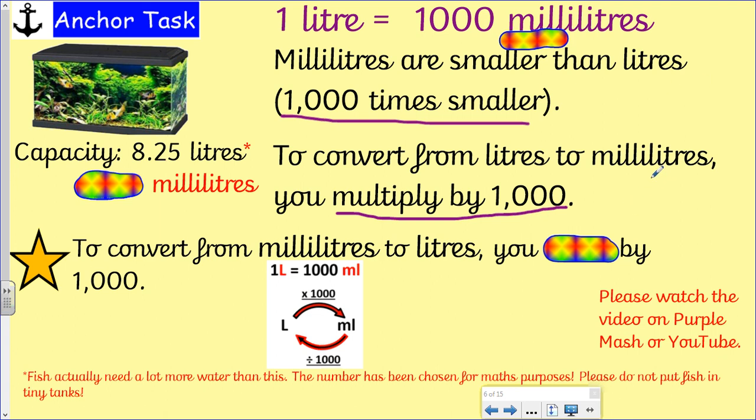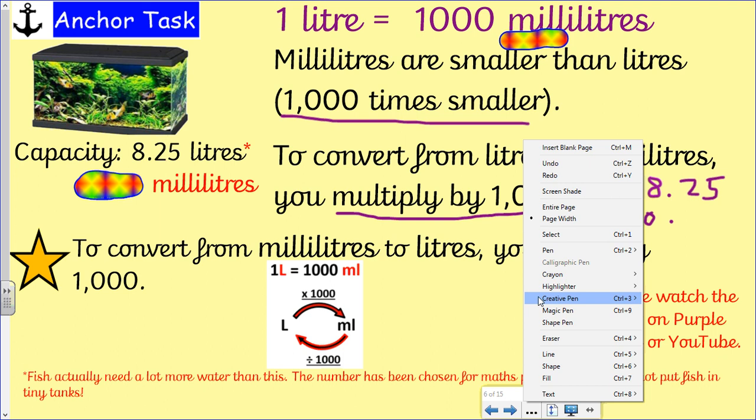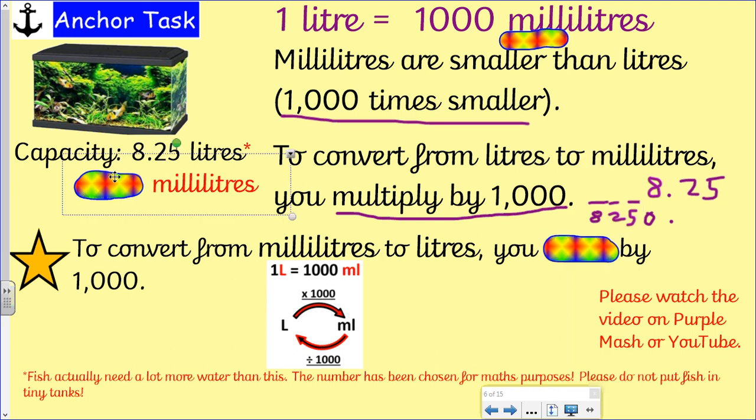We've got 8.25 litres and we need to multiply that by a thousand. Now if you need to, you can do the line method: one, two, three places, three zeros, three jumps. Line your decimal point up, so we're going to move eight, two, five, and then we've got our ones column here which is going to need a placeholder zero in it. So we end up with 8,250 millilitres.